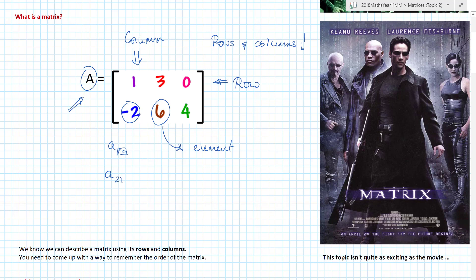For example, A₂₁ means it is the second row and the first column. If I had A₂₃, that would be the second row and the third column — so that element would be four. This concept of rows and columns is really important because it helps us know whether we can add, subtract, and do all sorts of math. This matrix would generally be expressed as a 2 by 3 — two rows by three columns, RC.